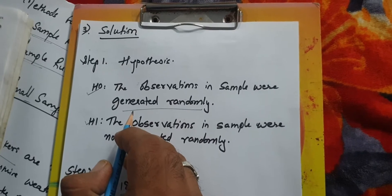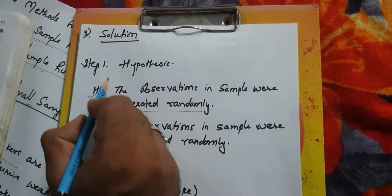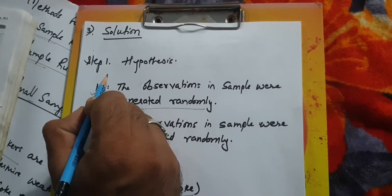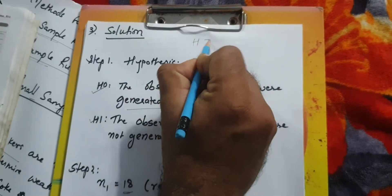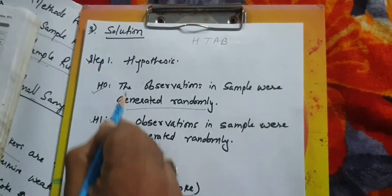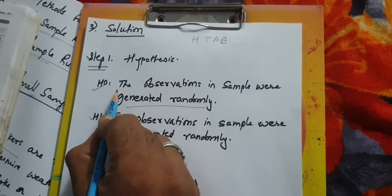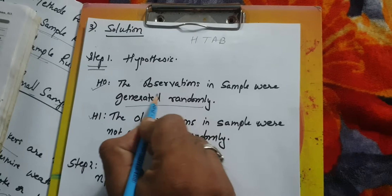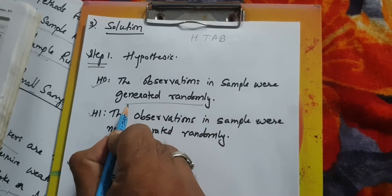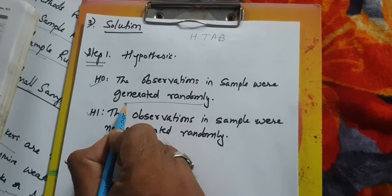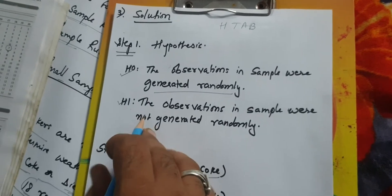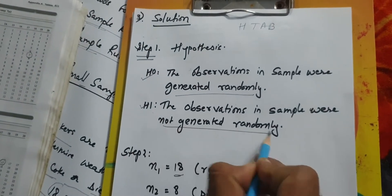Let's see the solution. It follows hypothesis testing, so the first step is our hypothesis. The null hypothesis would be that the observations in the samples were generated randomly. The alternate would state that observations were not generated randomly.